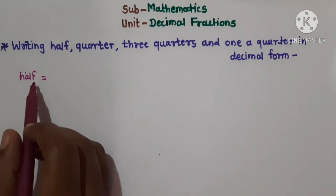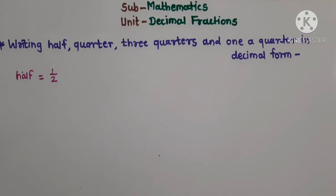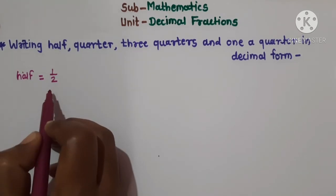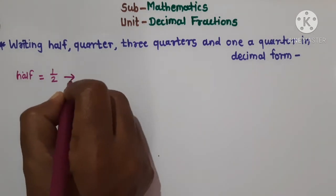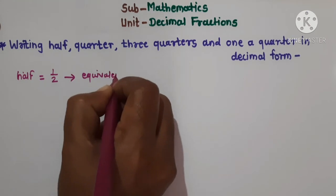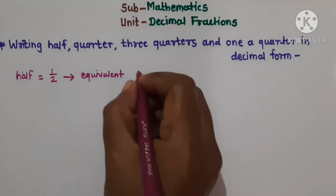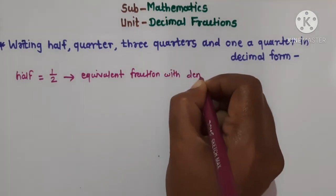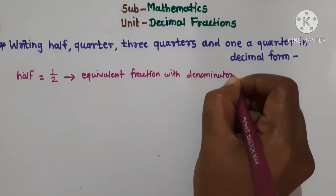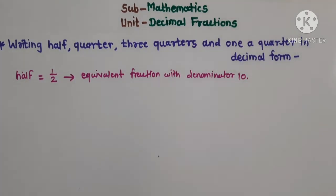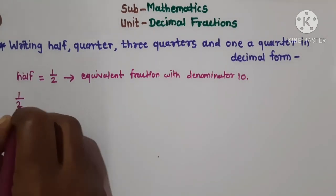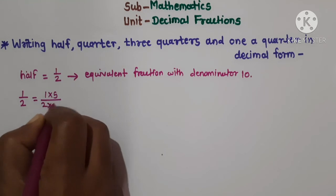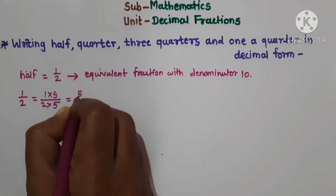Students, as we know, half is usually written as one half. To convert this fraction into decimal form, the denominator of 1 upon 2 must be converted into an equivalent fraction with denominator 10. So let us convert: 1 upon 2 is equal to 1 × 5 upon 2 × 5, which equals 5 upon 10.